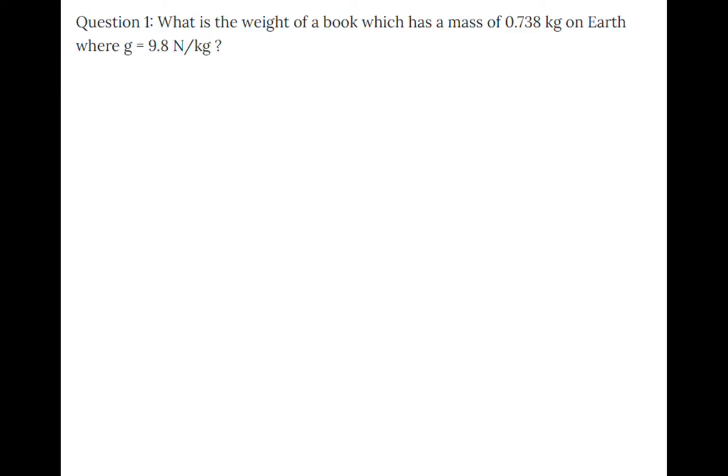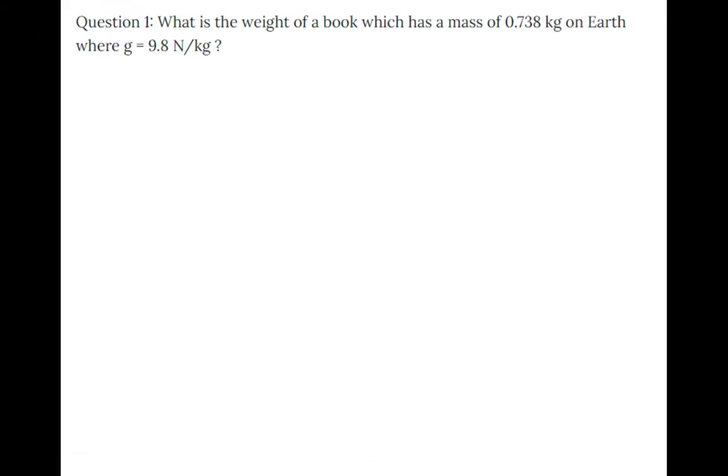Let's have a look at some questions. If you want to have a go, pause and check your answer. The question says: What is the weight of a book which has a mass of 0.738 kilograms on Earth, where g is 9.8 newtons per kilogram?